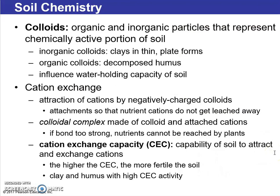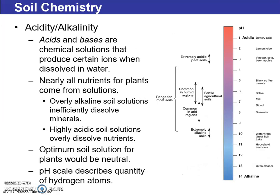Now we're touching on soil chemistry: colloids, acidity, and alkalinity. Colloids are organic and inorganic particles representing the chemically active portion of soil. Cation exchange is the attraction of cations by negatively charged colloids, and cation exchange capacity causes certain particles to bond with others. Regarding acidity and alkalinity, certain ions are dissolved in water, and certain types of plant life do well in alkaline soils while others prefer acidic soils. For instance, potatoes tend to do well in alkaline soils.